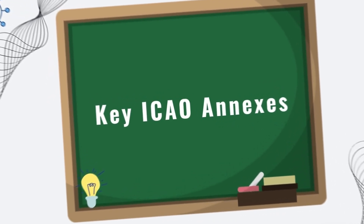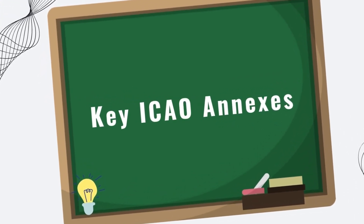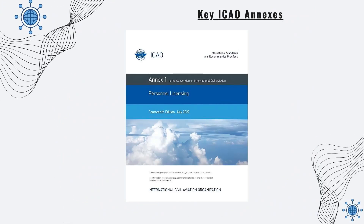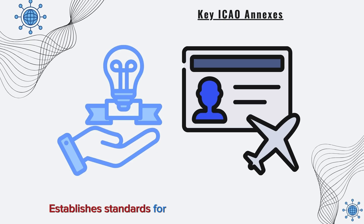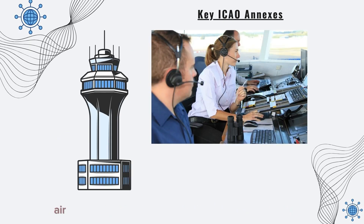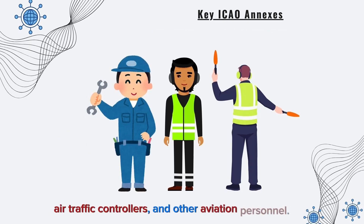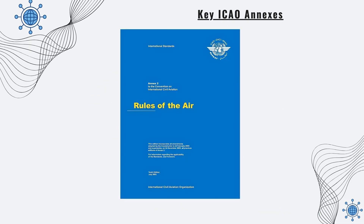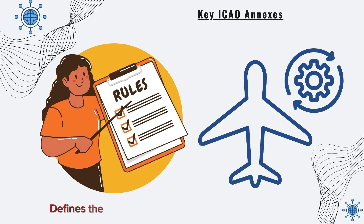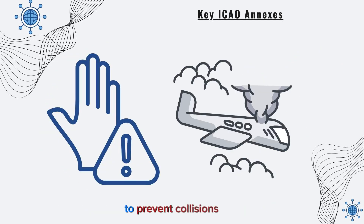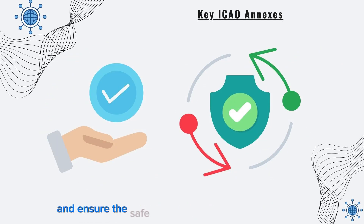Let's start with key ICAO Annexes. Annex 1, Personnel Licensing, establishes standards for the licensing of flight crew, air traffic controllers, and other aviation personnel. Annex 2, Rules of the Air, defines the rules for the conduct of flight operations to prevent collisions and ensure the safe and orderly flow of air traffic.